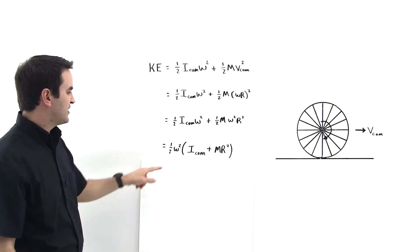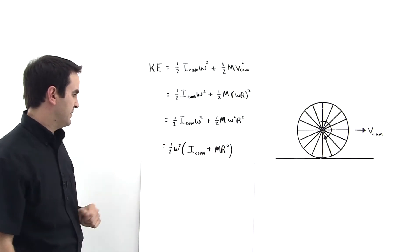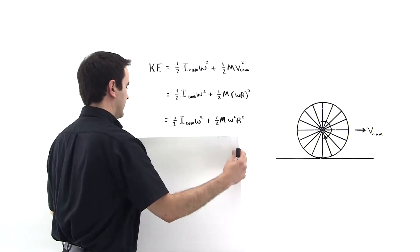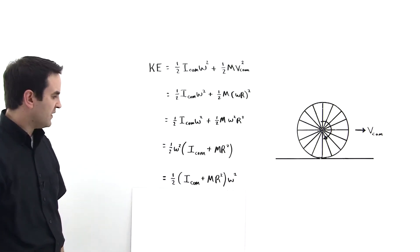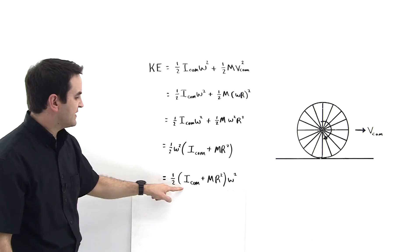Now let's rearrange. Let's just take this omega squared and put it on the other side for demonstration. So we just rearrange it like so.